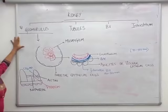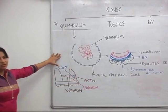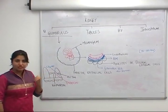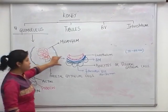The glomerulus is the functional unit of the kidney. What is the glomerulus? It is made up of a Bowman's capsule enclosing a tuft of capillaries. From a pathology perspective, let's take a cross section of this tuft of capillaries and see what we find.